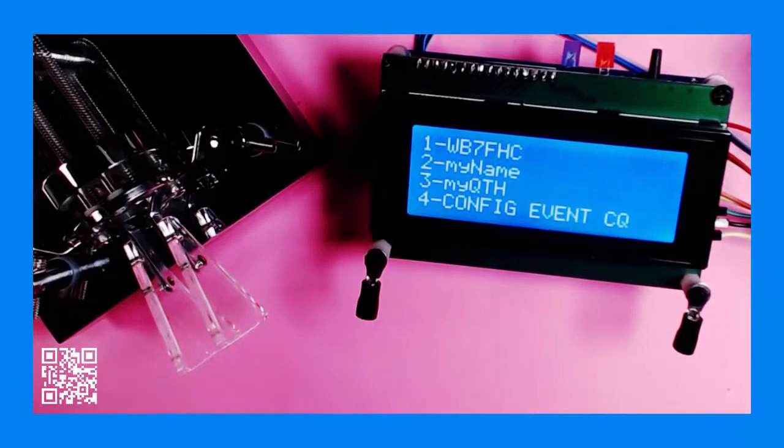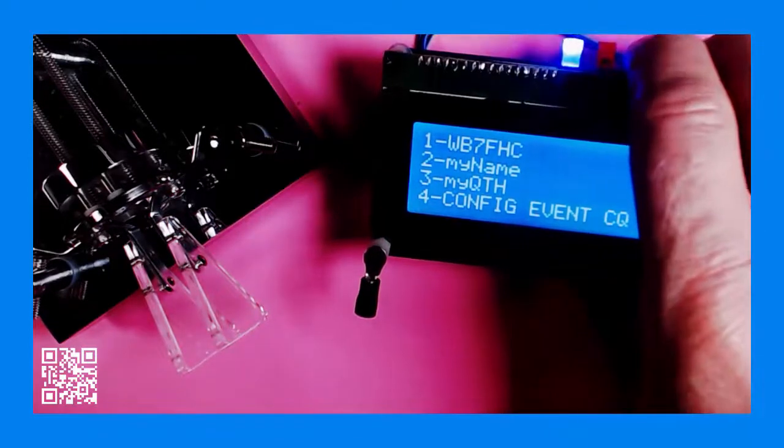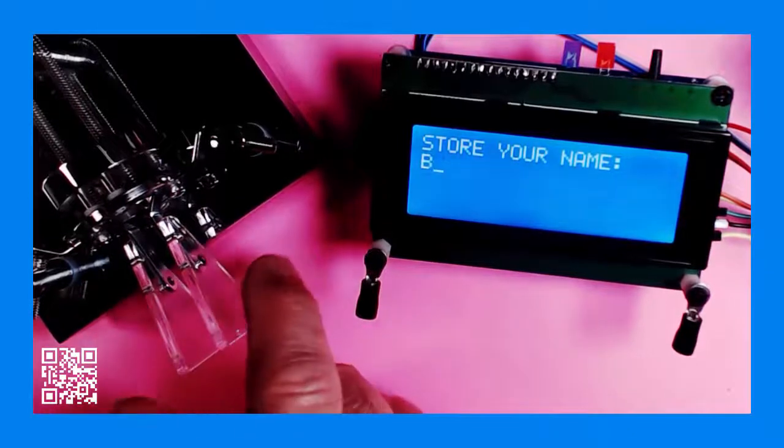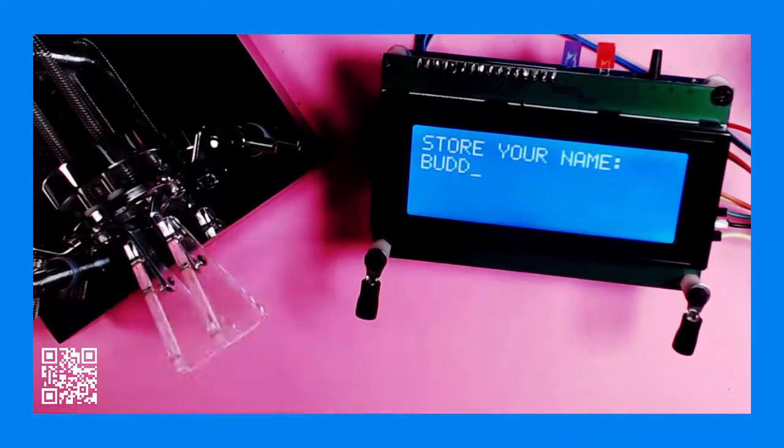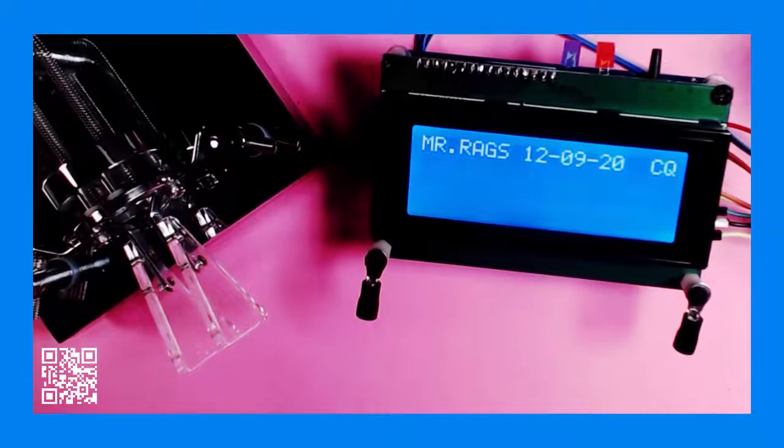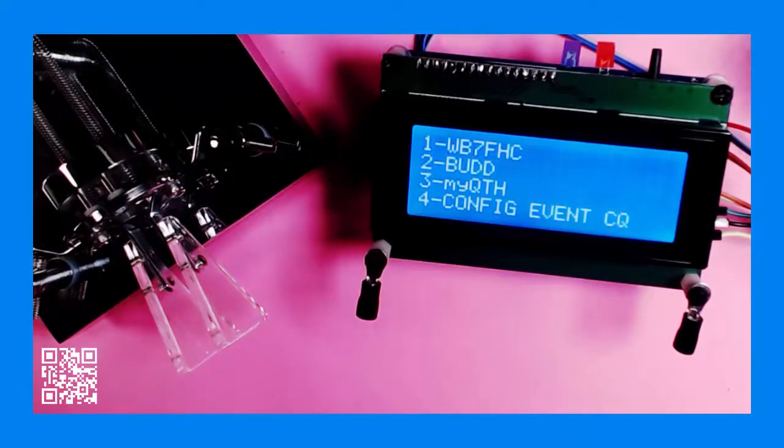give it my name. To do that, I'll hold the function key down for two beeps and I'll send my name. I'll store it with one beep. Finally, for this demonstration, I'll finish by storing my QTH. First I'll hold the function key down for three beeps and